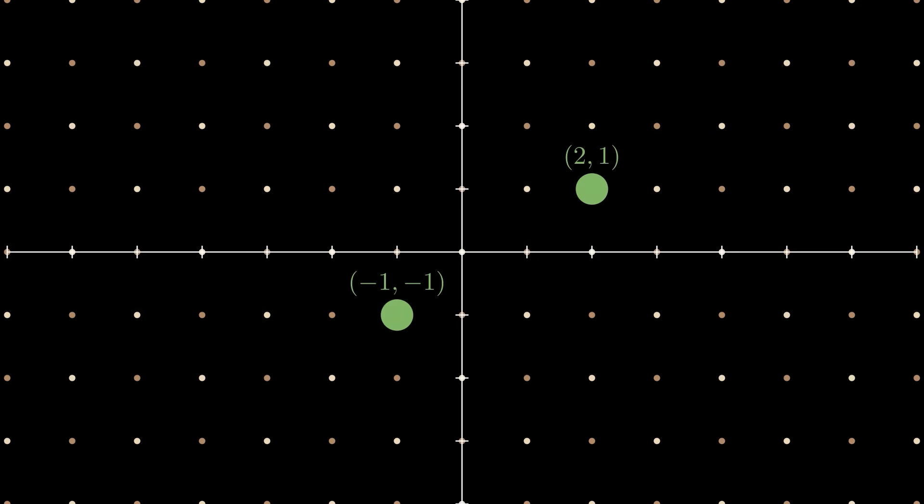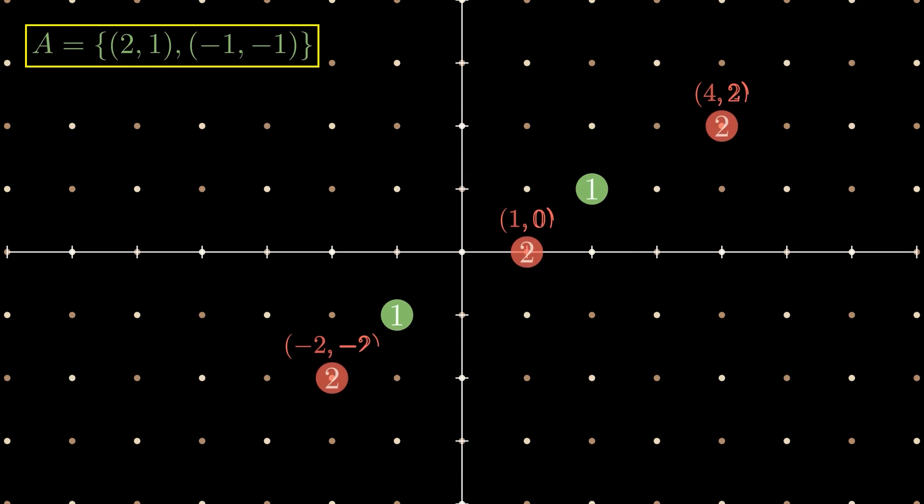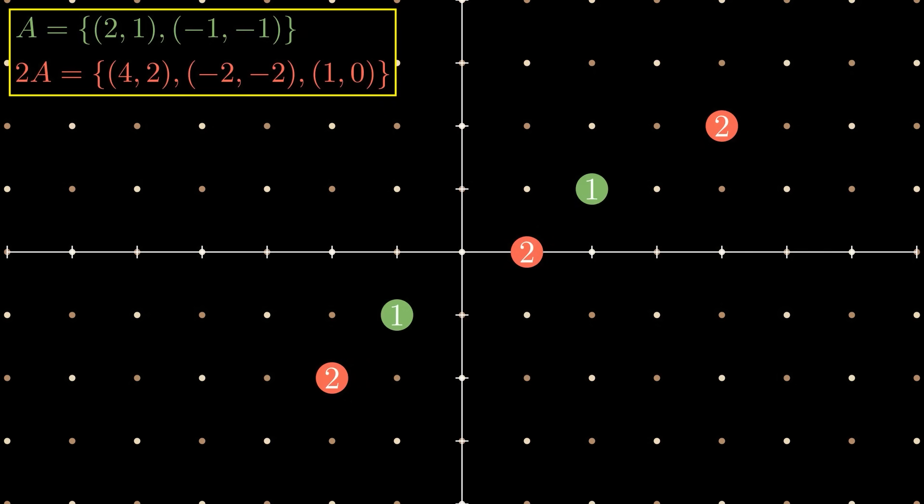Now I want you to imagine I start with some initial set of points. Here I've got the points (2,1) and (-1,-1) and I'm going to label the set A to be the set that has those two points in it. This is going to be my starting set so I'll put a 1 labeling each of these points at stage 1. Now let me add some stage 2 points. These three points I'm going to call the set 2A and I got them by adding together two things from A. So this new set 2A is all the ways that I can take two things from A and add them together.